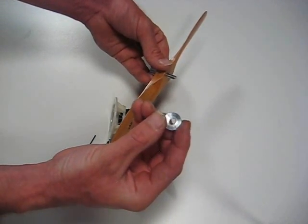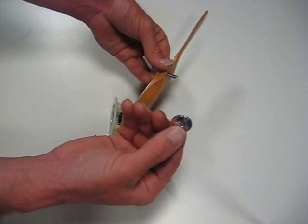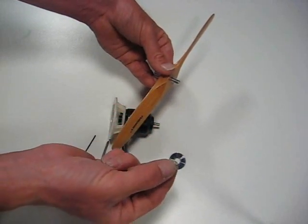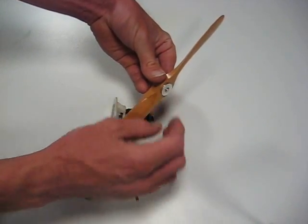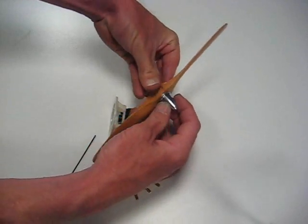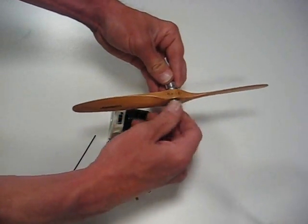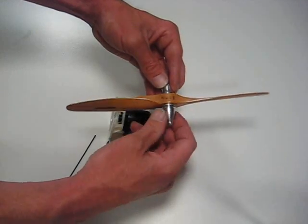Now, here's the aluminum washer. This washer's got a flat edge and a rounded edge. You want the flat edge to go against the prop. Take the spinner cap and thread it on most of the way. Doesn't need to go all the way yet.